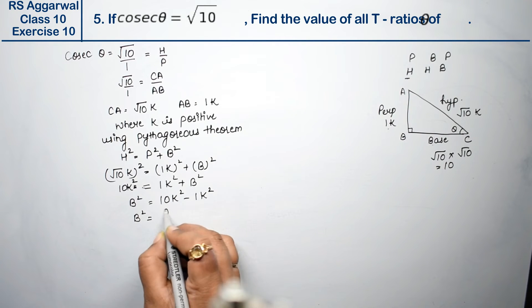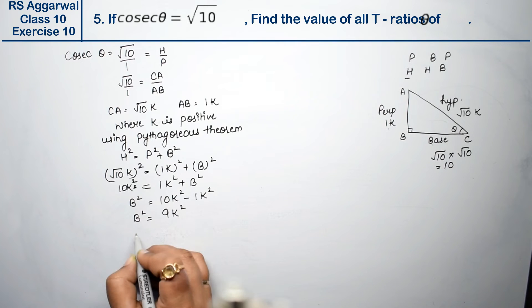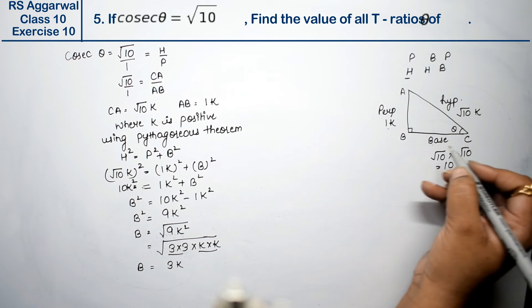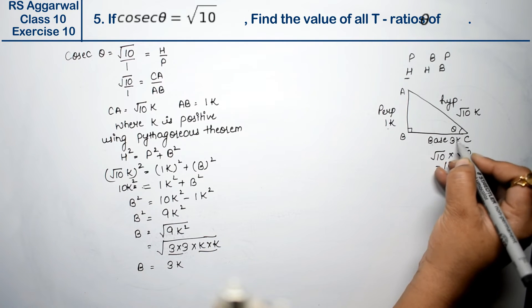So B square becomes? 9k square. So B's value is? Square root of 9k square. That means 9 can be written as 3 into 3. And k square means k into k. Taking one out, this becomes 3k. So base is 3k.